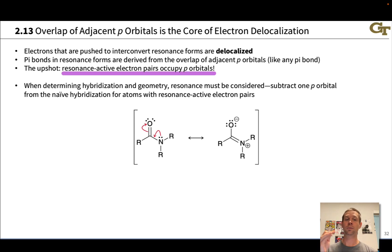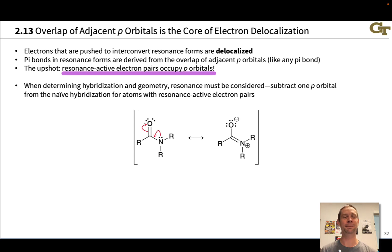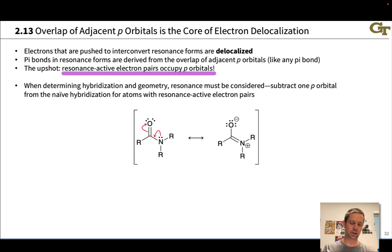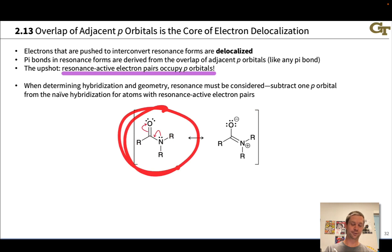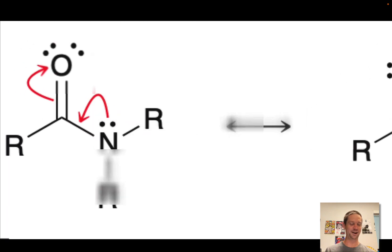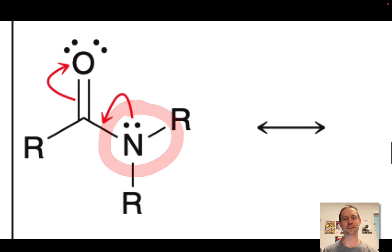We have to consider resonance when determining hybridization and geometry. For any resonance-active pair of electrons or resonance-active atoms, we subtract one p orbital from the 'naive' hybridization — the hybridization you'd predict based on VSEPR theory — at atoms with resonance-active electron pairs. Focusing on the nitrogen in an amide functional group: this is a resonance-active atom with the allylic lone pair structure built in, so we can flow electrons and generate an alternative resonance form.